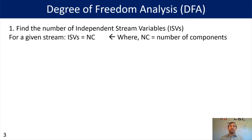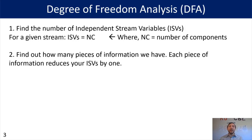For the degree of freedom analysis, what we want to do is find the number of independent stream variables for a given stream, and those ISVs are going to equal the number of components, which I'm abbreviating as NC. After I figure out the number of independent stream variables — essentially the number of components I have — we're next going to find out how many pieces of information we have. Each piece of information will reduce our independent stream variables by one.